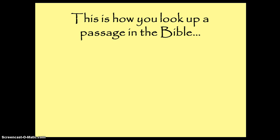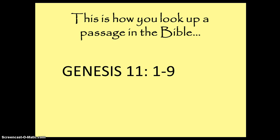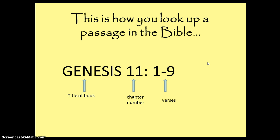First things first. Not everybody might know how to look up a passage in the Bible, so I'm going to quickly show you the basic outline. This is a typical example of how people label a Bible passage when writing it out. The word Genesis is the title of the book. Then we have a number for the chapter, followed by a colon — these two dots — and the numbers after the colon stand for the verses. So again: title, chapter, colon, then the verses. That is how you look up a passage from the Bible.